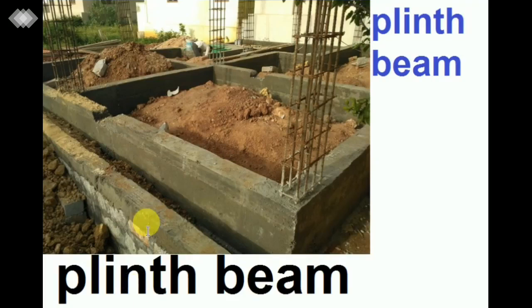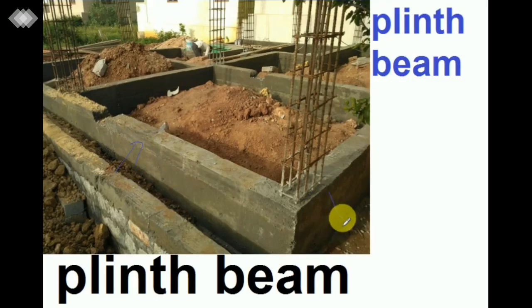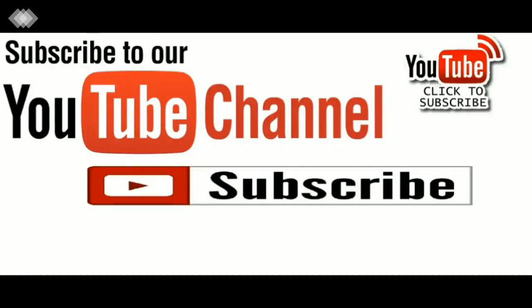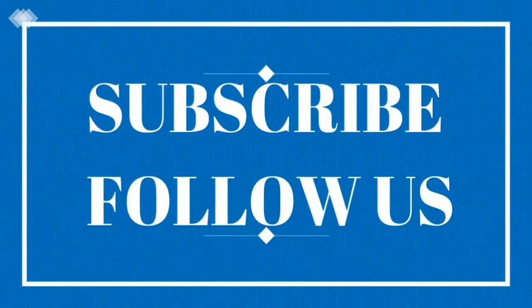Now you will see this is the plinth beam. At this level, as I am showing with the arrow indication, this is the plinth beam — this is the upper part — and at the foundation level, the ground beam is supported on which this column is resting. In these two pictures I hope you have a clear idea of what is the plinth beam and the ground beam. Thank you.